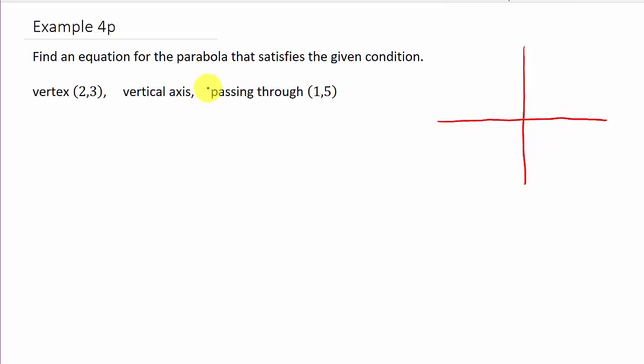So we've got the point 2, 3, that's the vertex, and then we've got the point 1, 5, that's a point on the parabola. So if this is the vertex, the only way we're getting here is if this thing opens up. So we know it opens up, and it tells us we have a vertical axis.